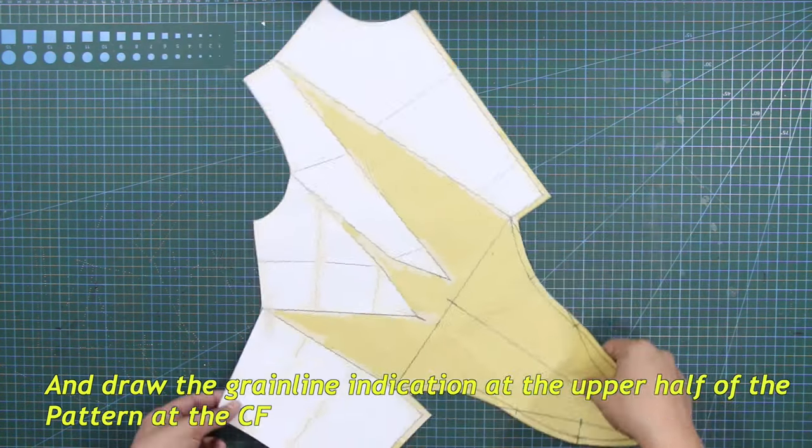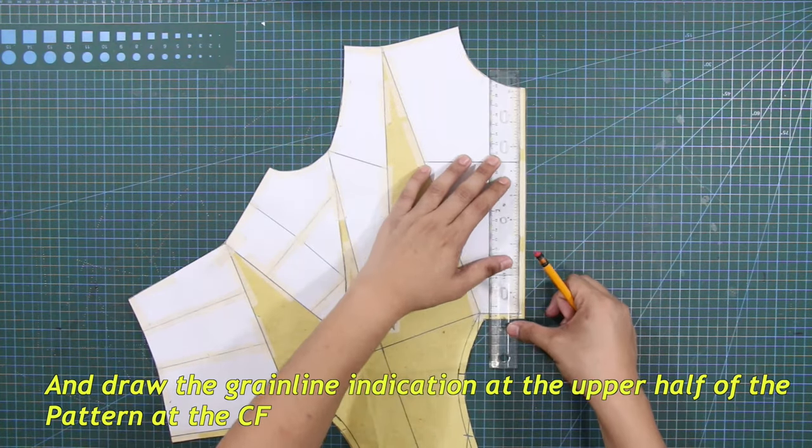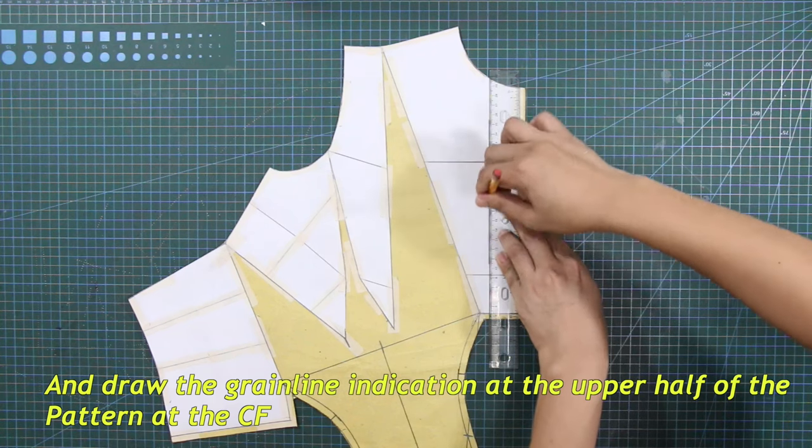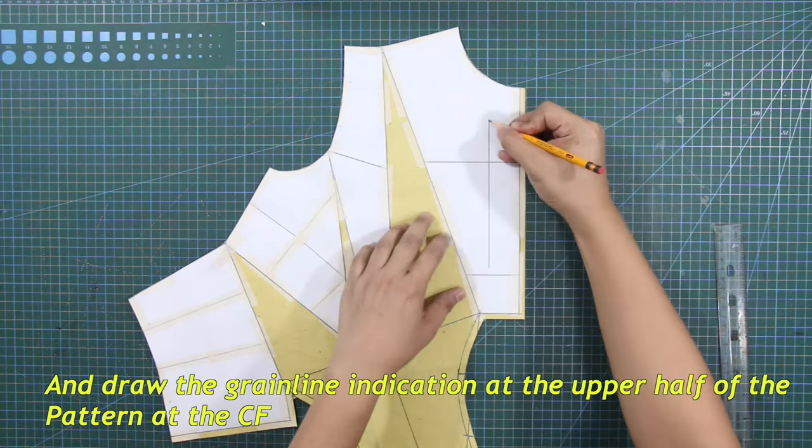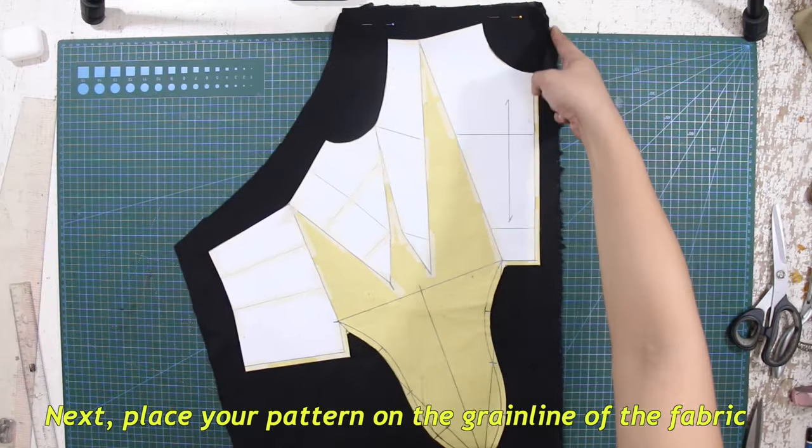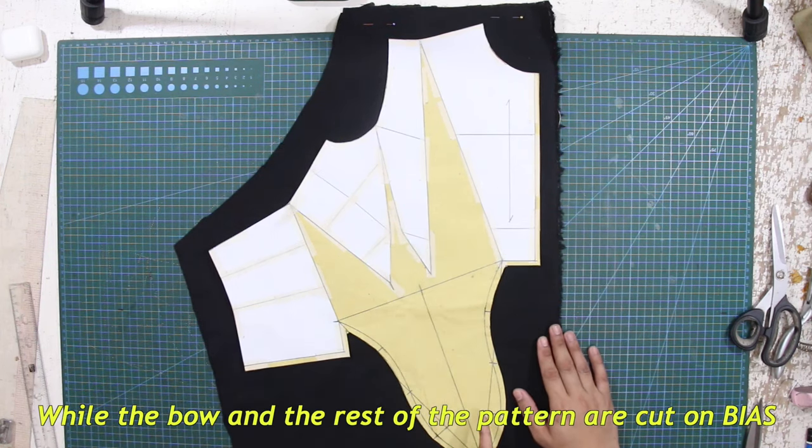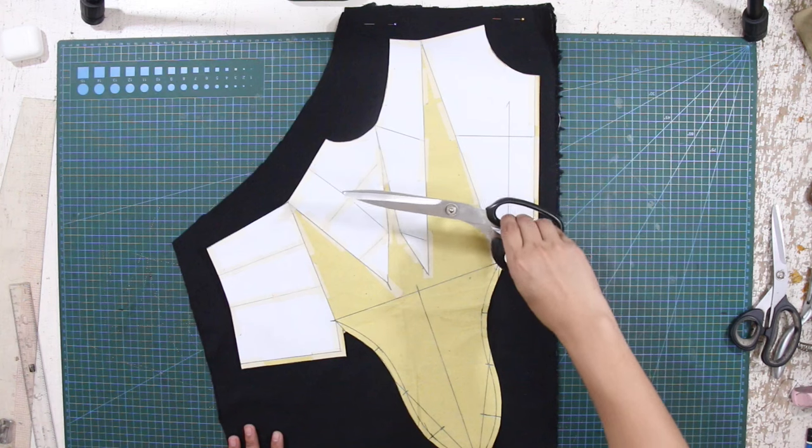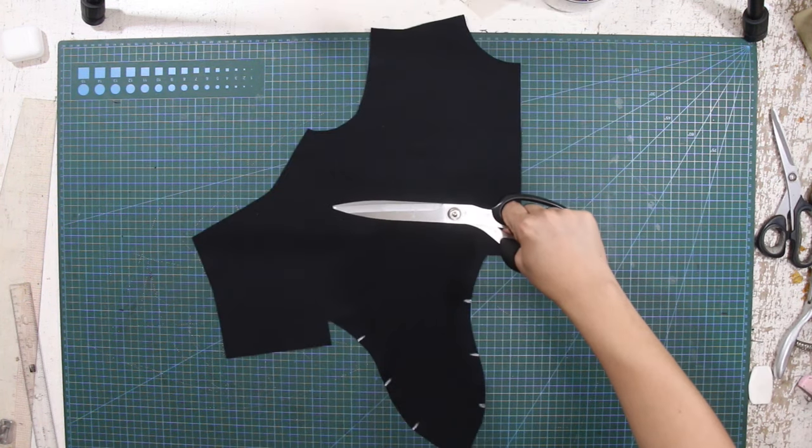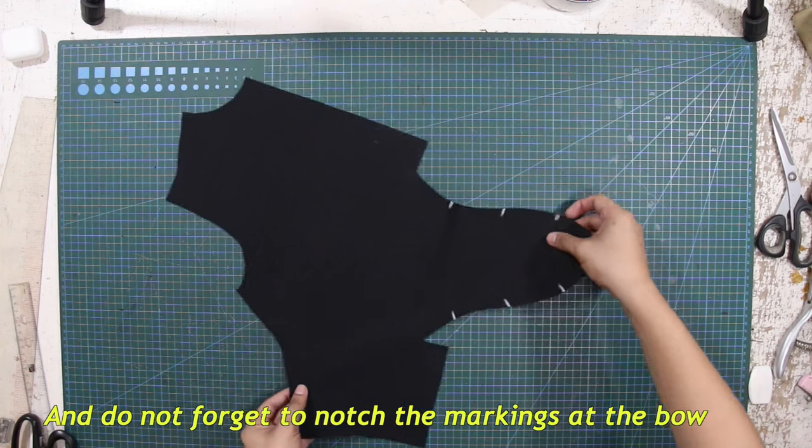And draw the grainline indication at the upper half of the pattern at the center front. Next, place your pattern on the grainline of the fabric, while the bow and the rest of the pattern are cut on bias. And do not forget to notch the markings at the bow.